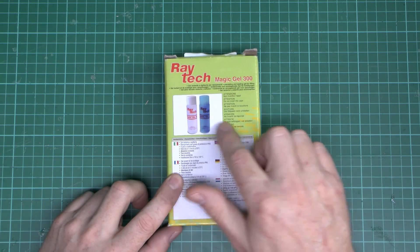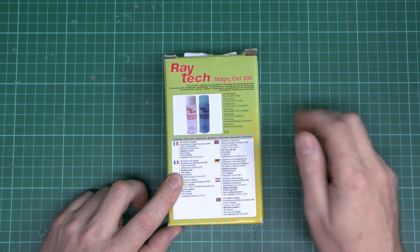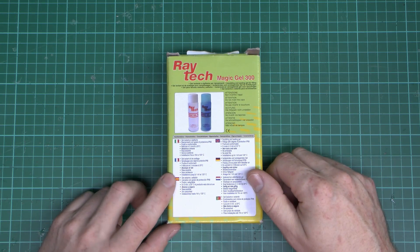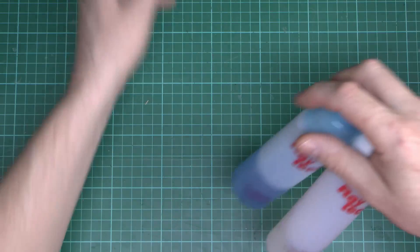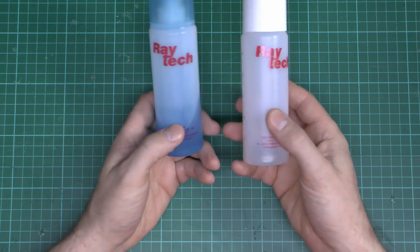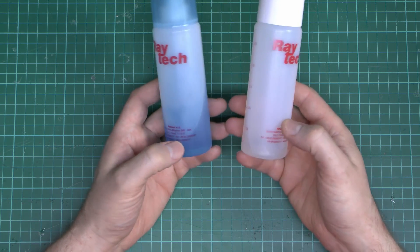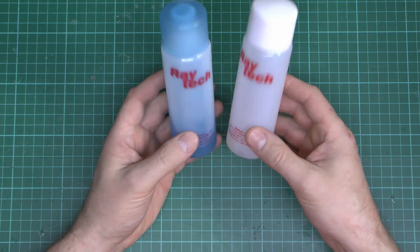So this is what you get here. Basically it's two bottles, and this is the 300 size, which is 300 milliliters. Obviously other sizes are available. And what you actually get inside are these two bottles, two of the same size. One's white, and the other one is blue, and it's the same amount of each.